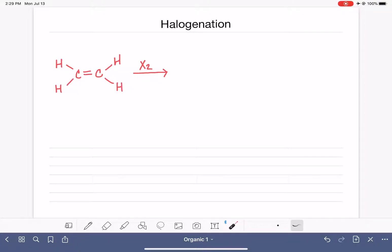Halogenation is a reaction between an alkene and a halogen molecule, which we're going to abbreviate as X2. The halogen molecule used in this reaction is typically the chlorine molecule or the bromine molecule, Cl2 or Br2.